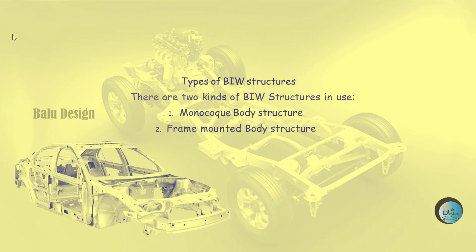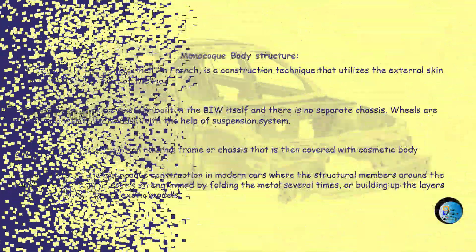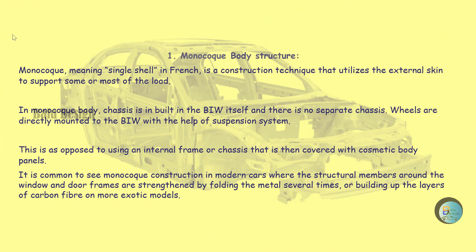Types of BIW structures: There are two kinds of BIW structures in use - monocoque body structure and frame mounted body structure. Monocoque, meaning 'single shell' in French, is a construction technique that utilizes the external skin to support some or most of the load. In monocoque body, the chassis is built into the BIW itself with no separate chassis. Wheels are directly mounted to the BIW with the help of a suspension system. Monocoque construction is common in modern cars where structural members around window and door frames are strengthened by folding the metal or building up layers of carbon fiber.